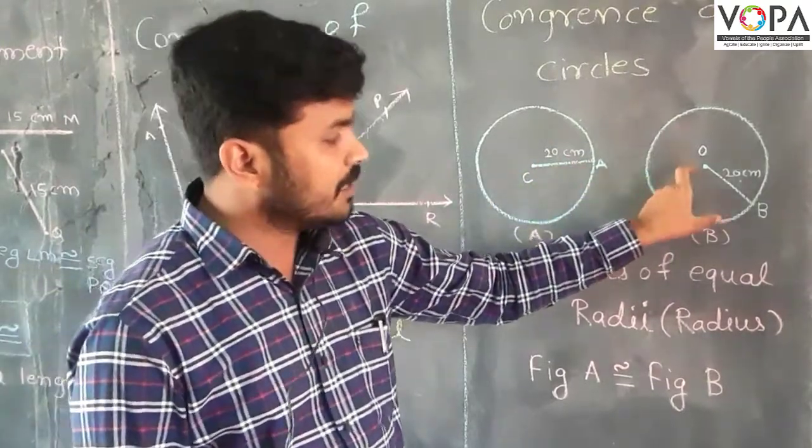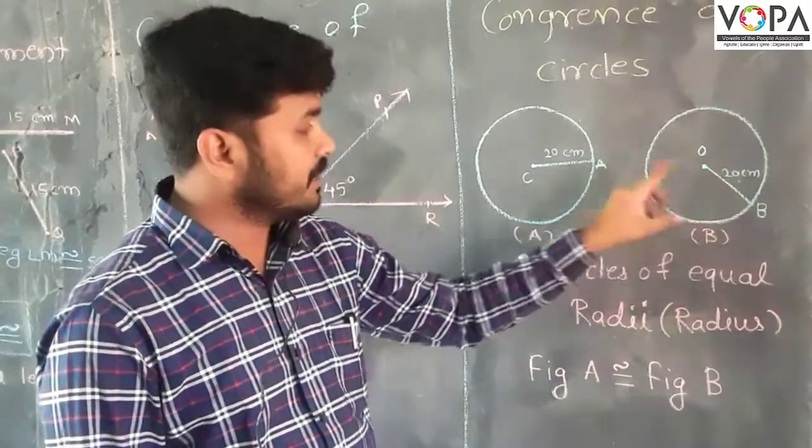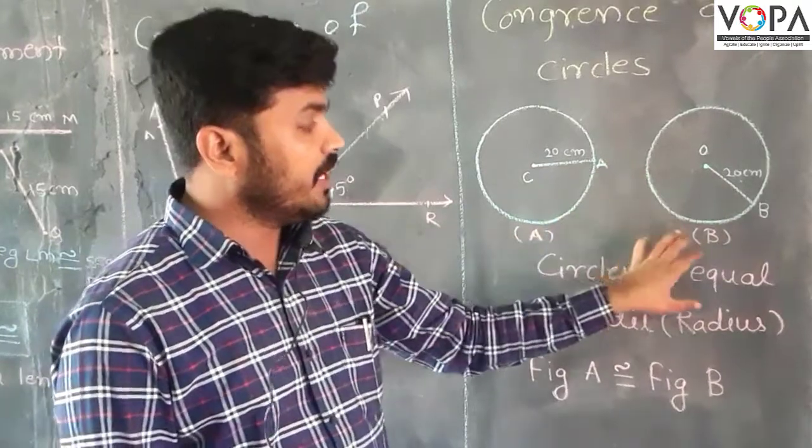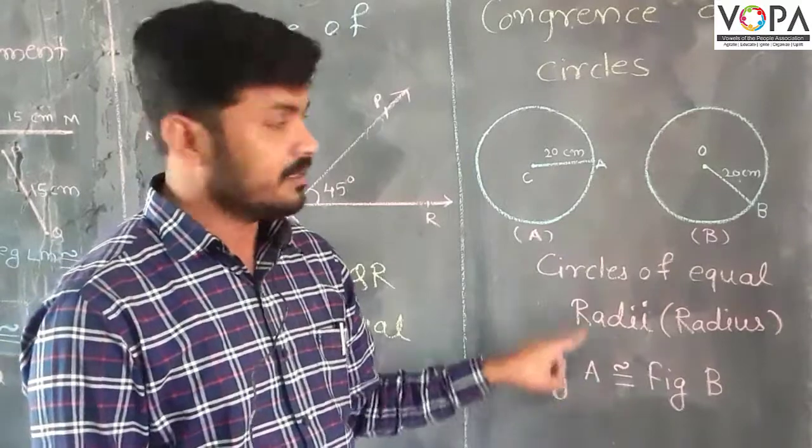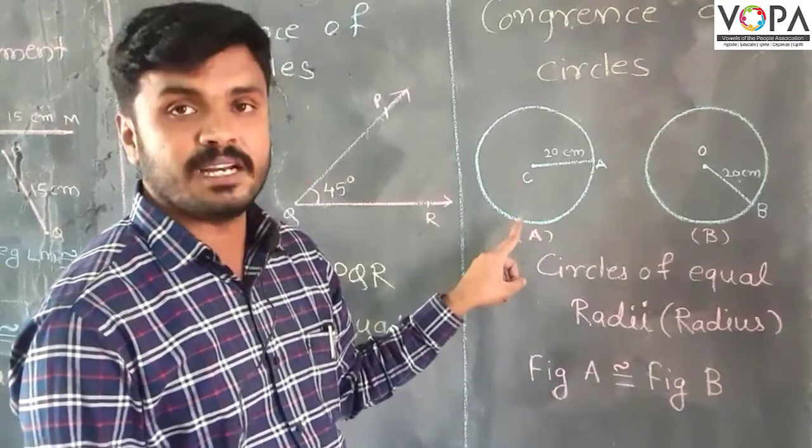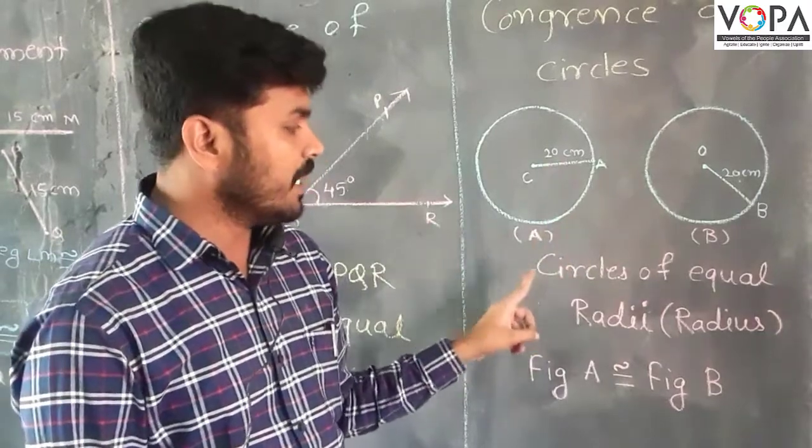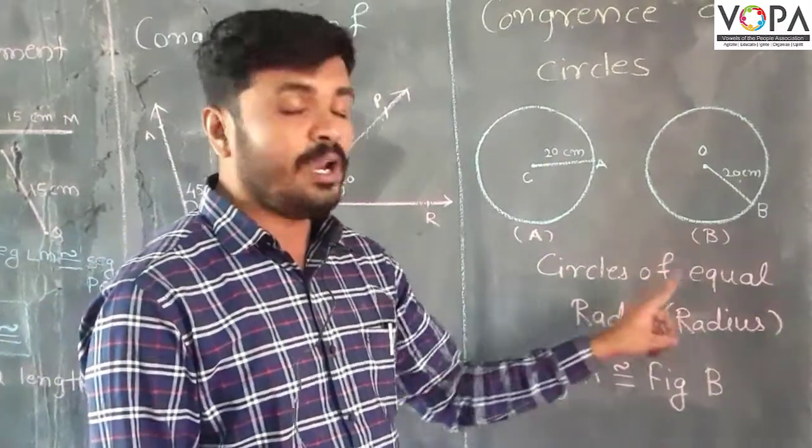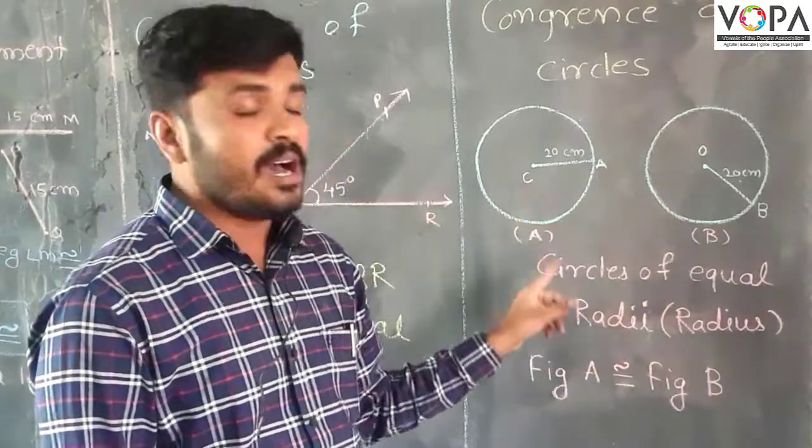The second one also has a radius of 20 centimeters. That means figure A and figure B are equal in the measure of their radius, so that's why circle A is congruent with circle B. So we can say that circles of equal radii are congruent with each other.